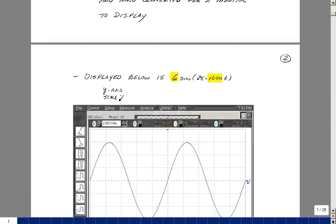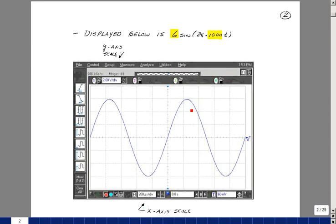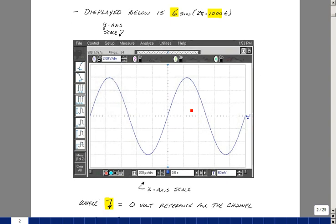The picture below is a screen capture of a 6 volt, 1000 hertz sine wave. The symbol here, a little ground symbol, indicates the zero volt reference.